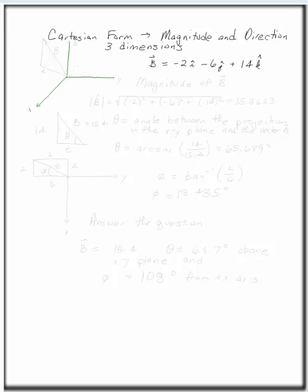So if we make this the x-axis, this one the y-axis, and this the z-axis, we have a situation that's going to be -2i, so we're dealing with something that's going to be over here, -6j, so we're going back this way, -6, and up from here in the z direction, 14.